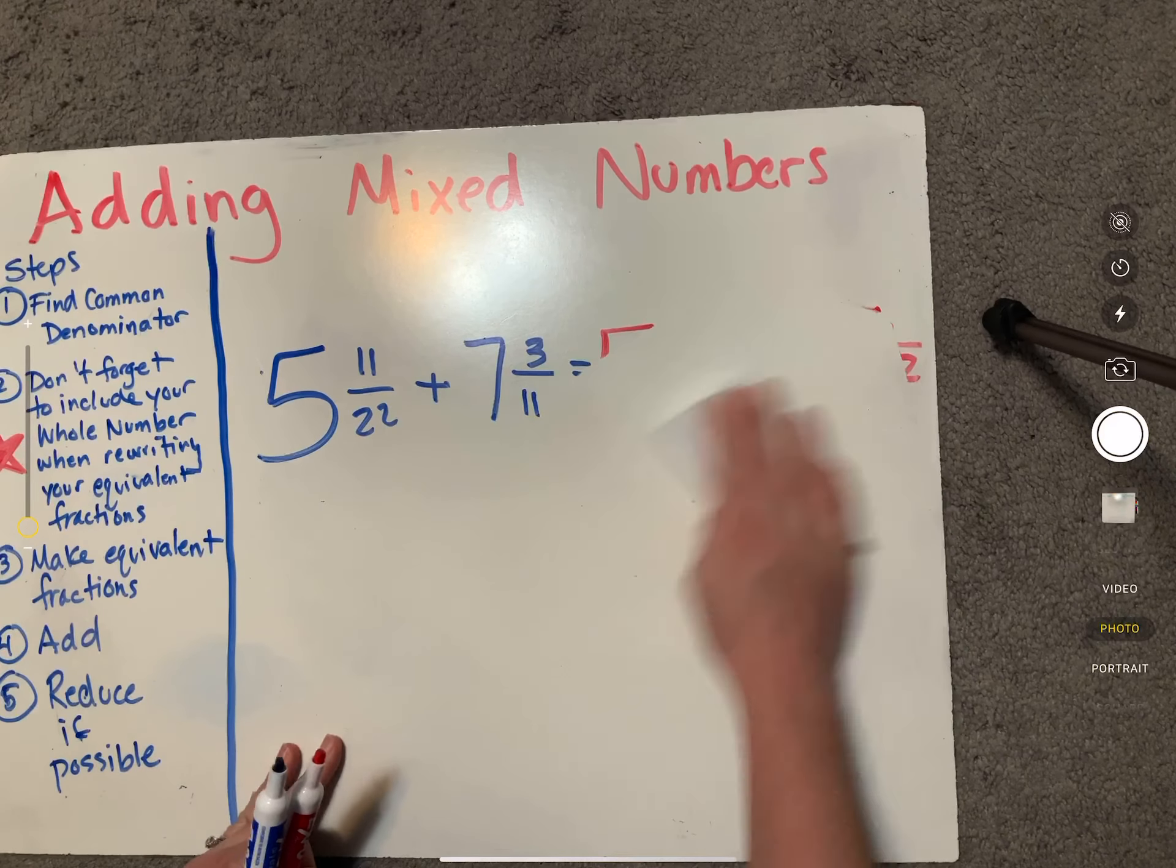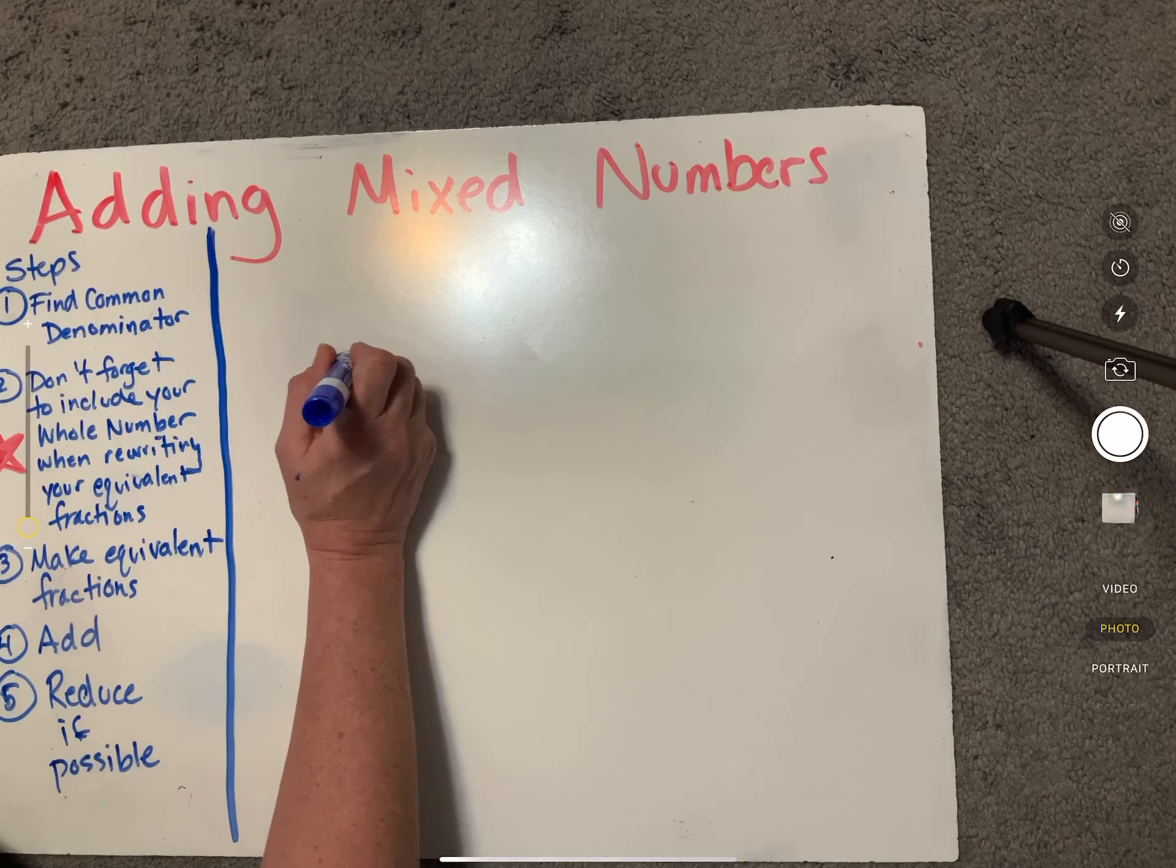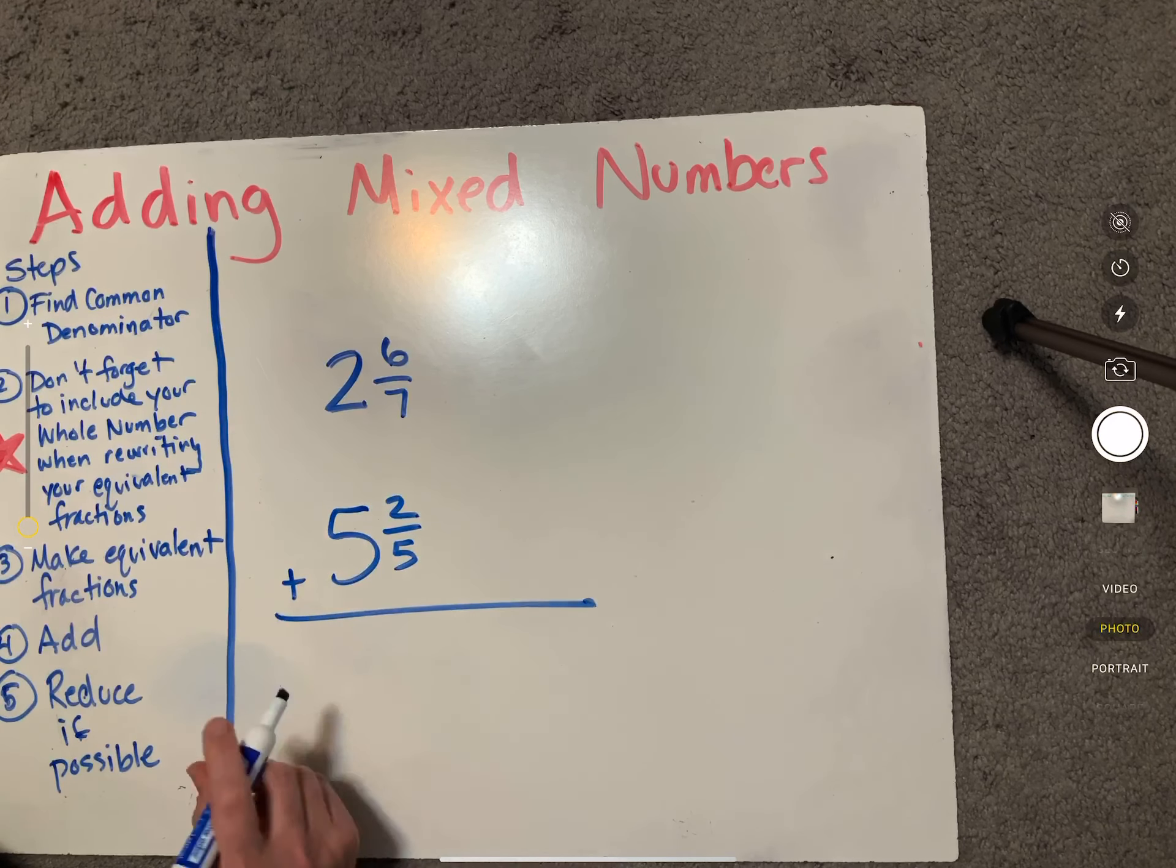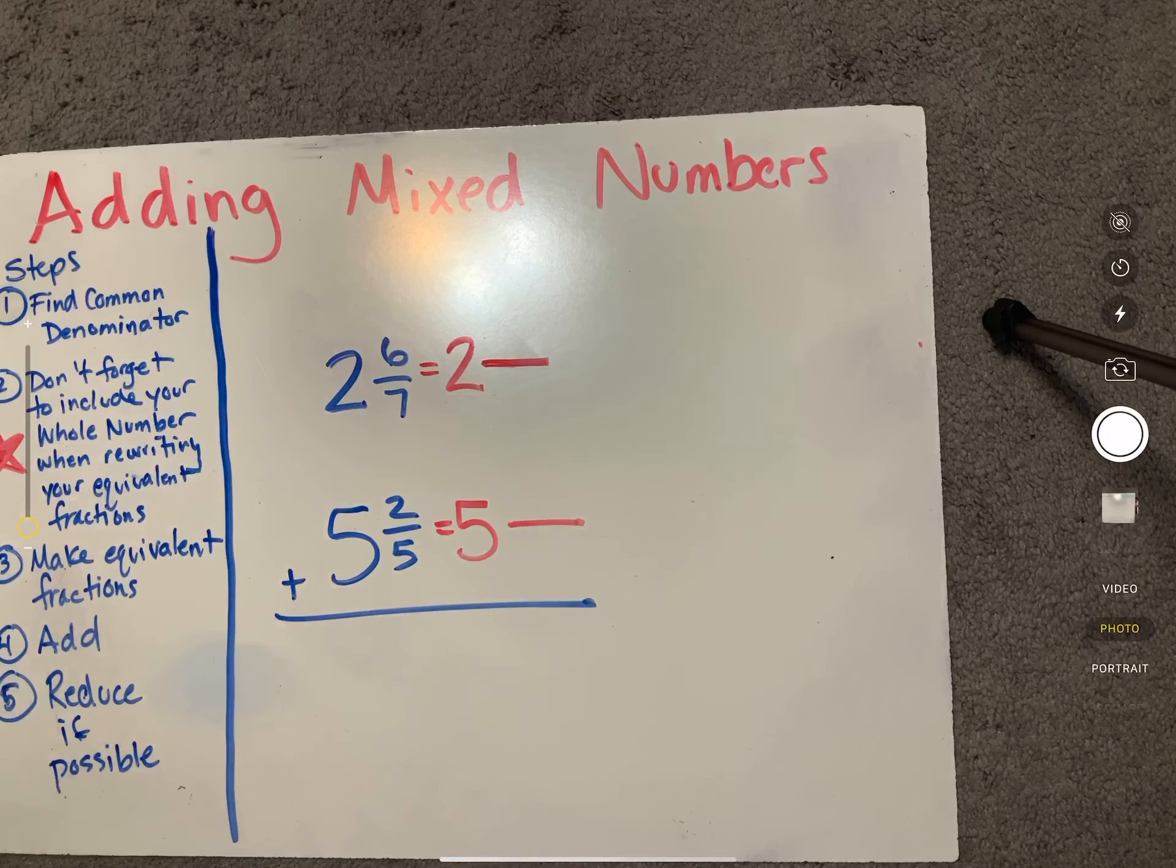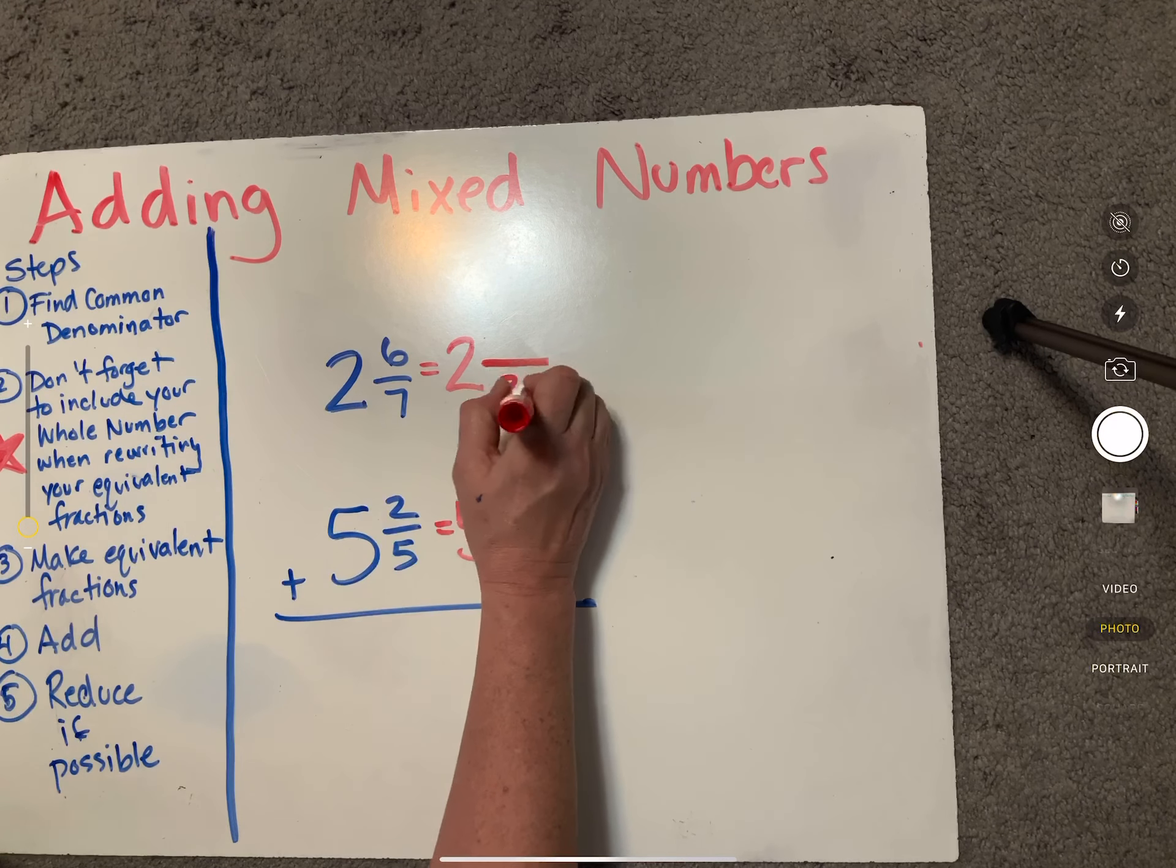Let's do a couple more or at least one more of those regrouping type ones. Not regrouping, but the improper fractions at the bottom. This first one we're going to do two and six sevenths plus five and two fifths. So once again, transferring your whole number over to your equivalent fractions every single time. I want you to do this every single time. Don't forget about those whole numbers.